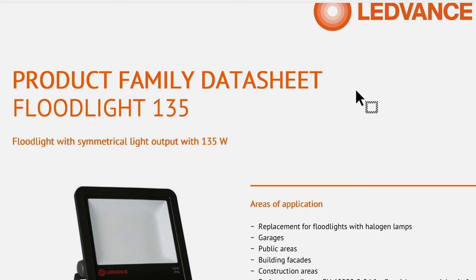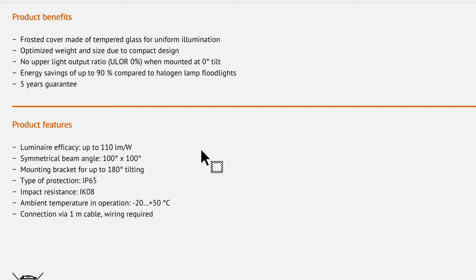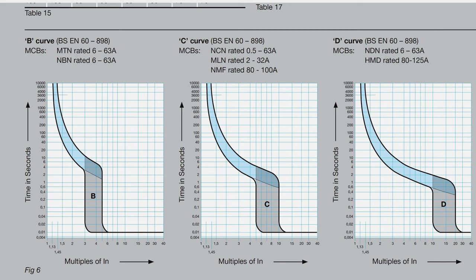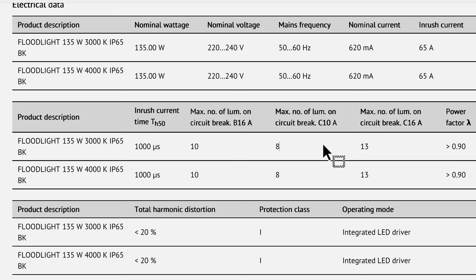This particular datasheet from Leadvance for a 130-watt floodlight actually states the maximum number of floodlights on a circuit breaker. It says maximum number of luminaires on a circuit breaker with a B curve at 16 amps is 10, and for a 10-amp circuit breaker following the C curve, we can only have eight. If you calculate eight times 135 watts that's 1080 watts, but a 10-amp breaker at 230 volts is 2.3 kilowatts — showing you can't just divide rated current by nominal floodlight current.